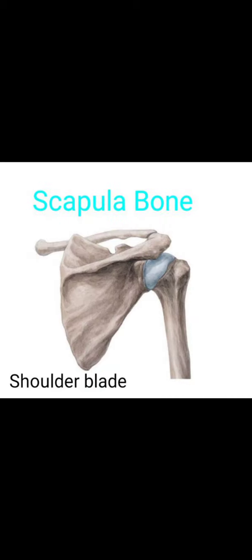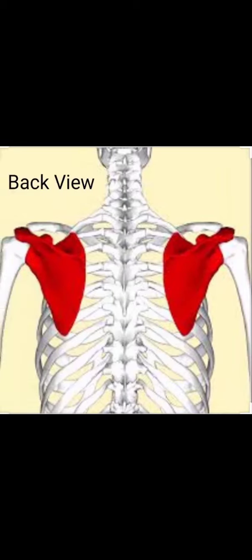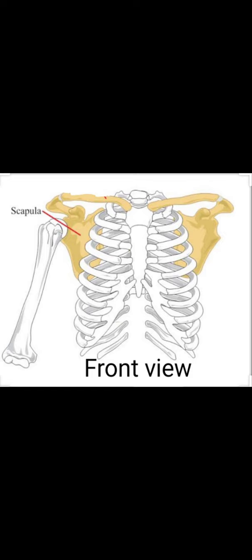Here you can see the structure of the scapula. The scapula bone is also called the shoulder blade because it is present at the shoulder. This is the back view of the scapula, or shoulder blade, and here is the front view of the scapula.